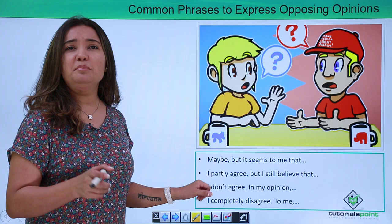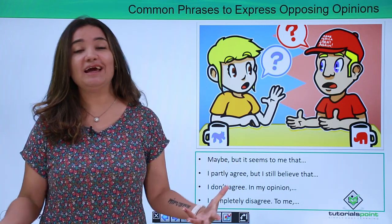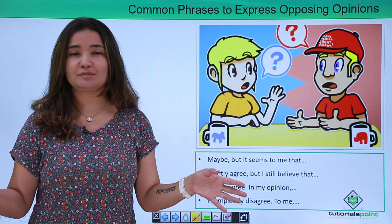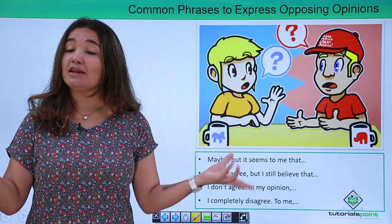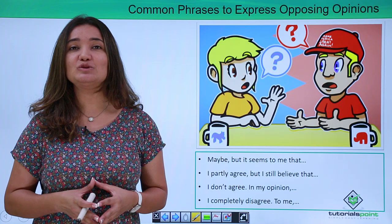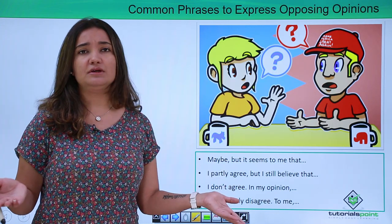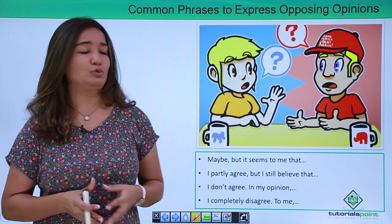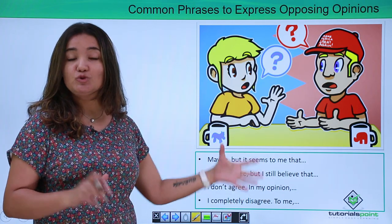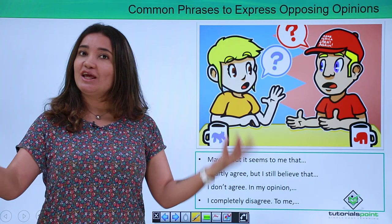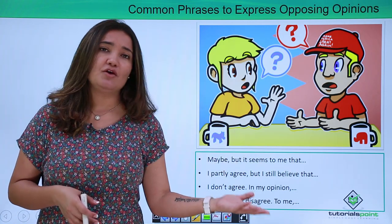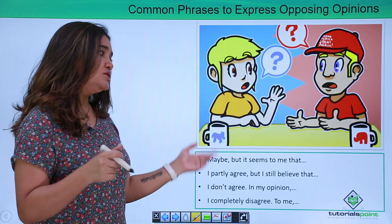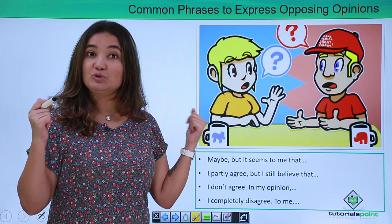'I completely disagree.' This is a step ahead — you are being very curt and not necessarily thinking about the feelings of the person in front of you. Again, if the situation demands it, you might want to use this phrase. So these are different phrases to express an opposing opinion. Depending on whether you want to be diplomatic, nuanced, assertive, or very direct, you can use any of these phrases based on the situation.